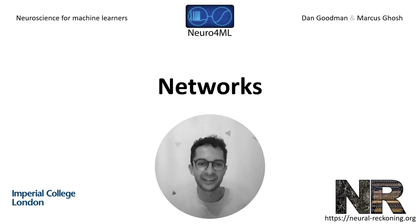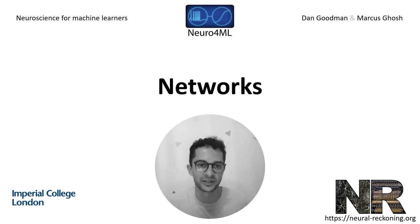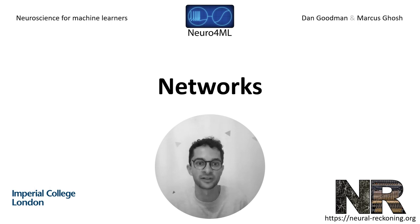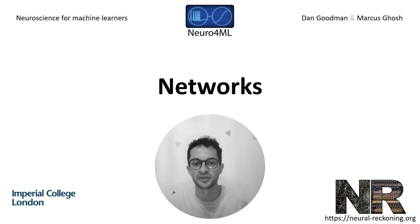In the last two videos we learned about how neurons synapse with and signal to each other. In this video we're going to learn about how neurons connect together to form networks or circuits. To do that, I'm going to give you two examples of networks found in biology.